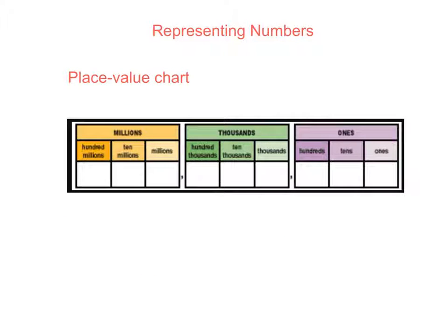Instead, what we should be doing when we have a number like 3,651 is always starting on the right-hand side in our ones place value.